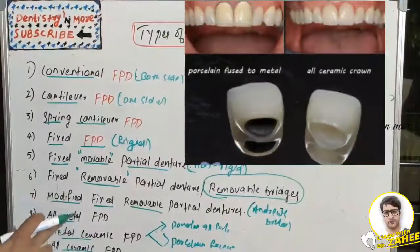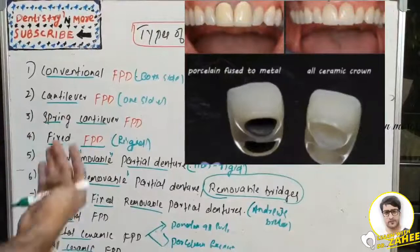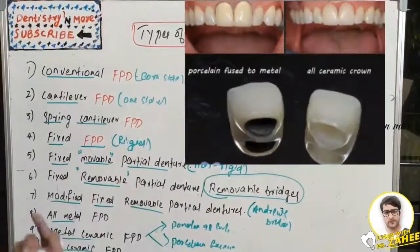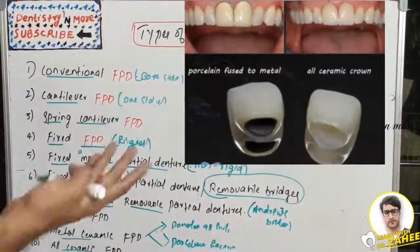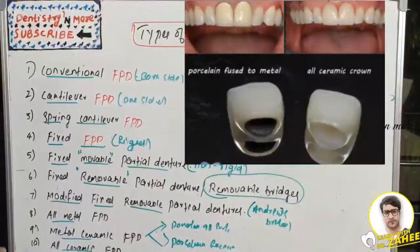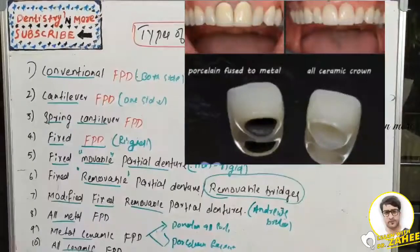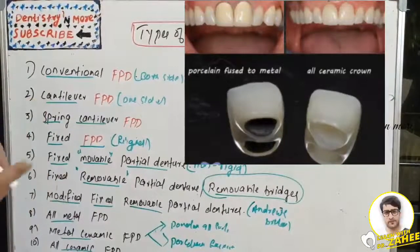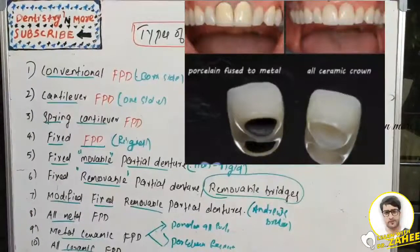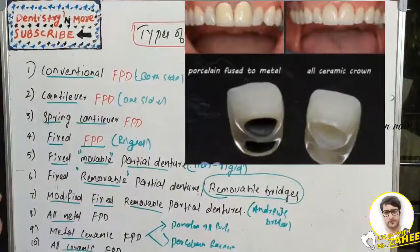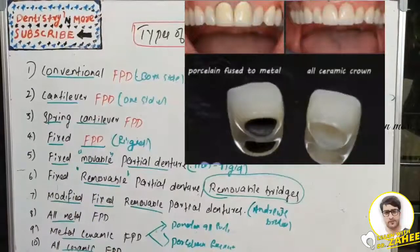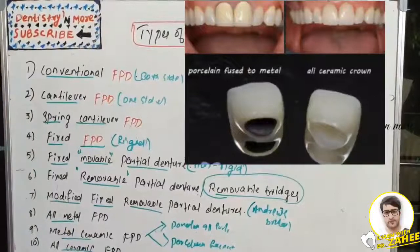The disadvantage of all-ceramic FPD is reduced strength due to lack of metal reinforcement. It is mainly used in anterior teeth. It is very difficult to obtain a well-finished margin because ceramic edges tend to chip easily. These crowns cannot be used on extensively damaged teeth, and since porcelain is brittle, large connectors are required, which can impinge on the interdental papillae, increasing potential for periodontal disease and causing wearing of opposing natural teeth.